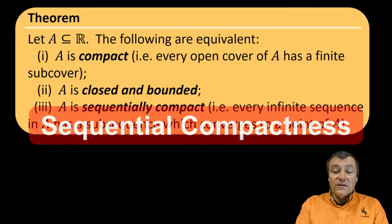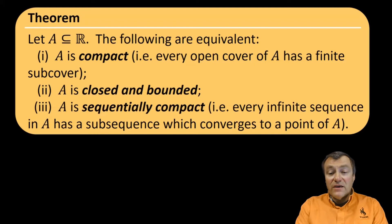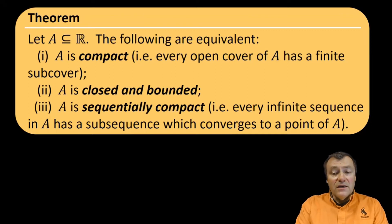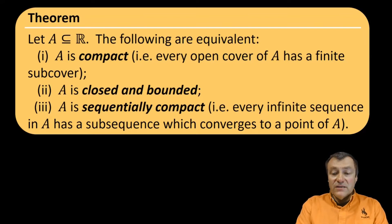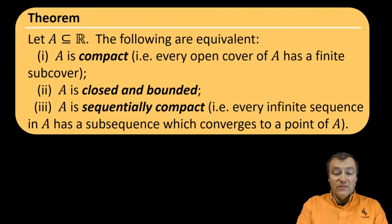In our video series on analysis, we've been most recently looking into notions from topology. Last video, we talked about compactness. Remember that a point set A is compact if every open cover of A has a finite subcover. Now, there is a closely related notion of sequential compactness, which says that every infinite sequence of points in A has a subsequence converging to a point of A.